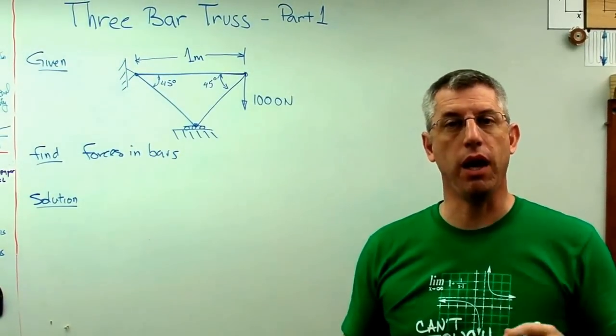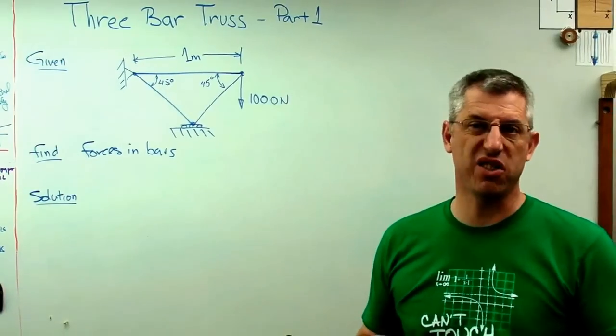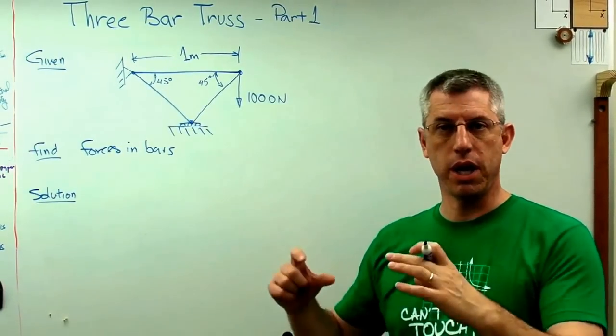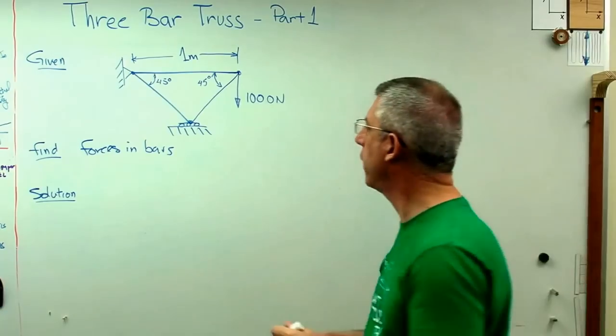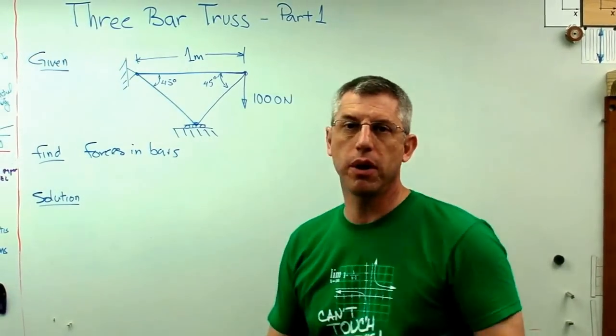GFSA is solution. I'm going to do all the calculations here. And the A part is answer. So GFSA, given, find, solution, answer. The answer part is going to be real short. I'll write out the word answer, put the answers down and draw a box around them. So I want to find the forces in the bars.